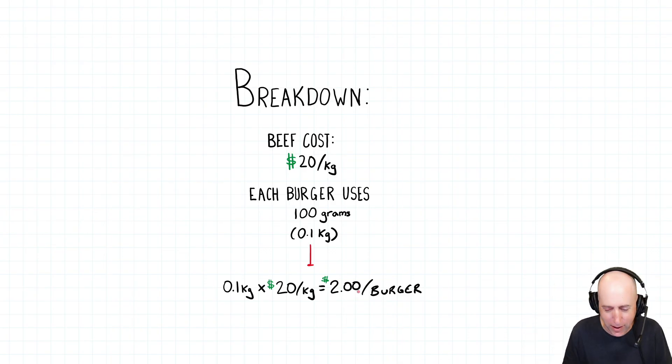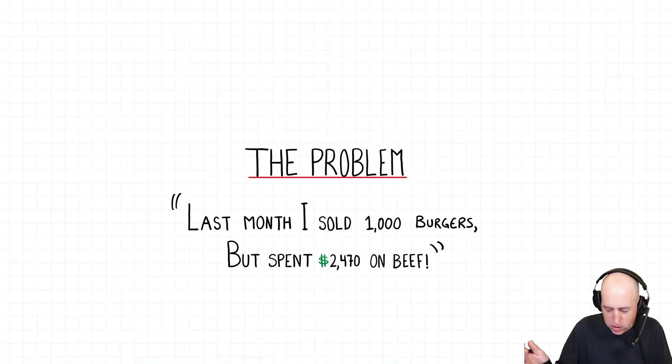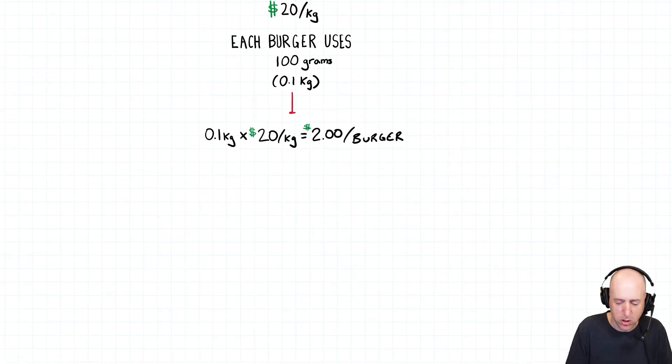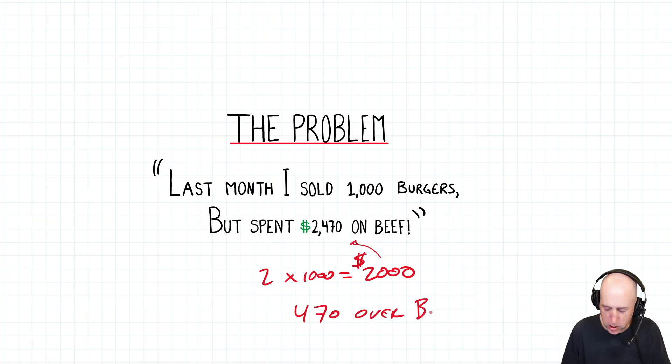That's about a quarter pound of beef, a little bit less. And so I just did the math. Point one, one hundred grams of beef is point one kilograms. So point one kilograms at twenty dollars a kilogram is two bucks a burger. And I said, absolutely. The math checks out. Nothing wrong with that breakdown at all. And so I said, well, you know, tell me more. And so he said, here's the problem. Last month I sold a thousand burgers, but spent twenty four seventy on beef.